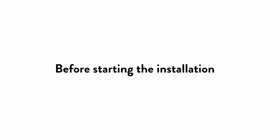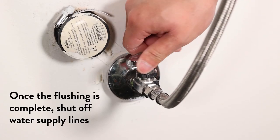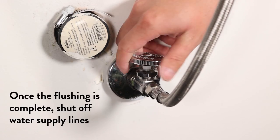Before starting the installation, it's important to flush your plumbing lines into a bucket or container to clear any debris. Once the flushing is complete, shut off water supply lines.